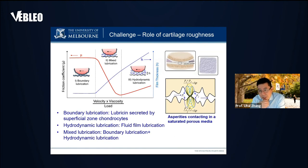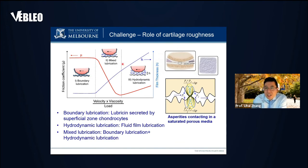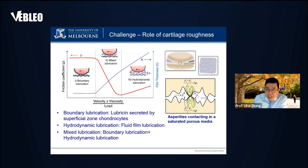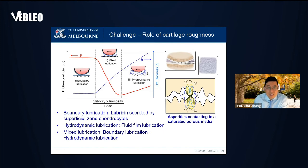Lubrication theory from mechanical engineering describes three types of lubrication. The first is hydrodynamic lubrication: before loading, the two cartilage surfaces do not touch — synovial fluid separates them. After loading for a long time, such as standing for an hour, the two surfaces finally touch, resulting in boundary lubrication. Most of the time, we are in mixed mode — sometimes boundary lubrication, sometimes hydrodynamic lubrication.